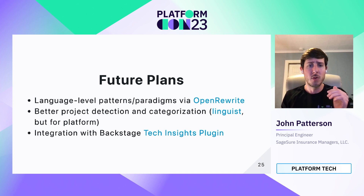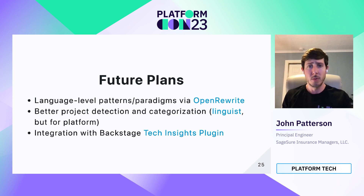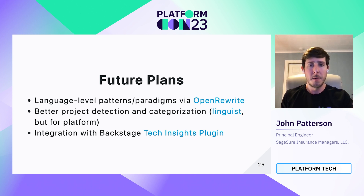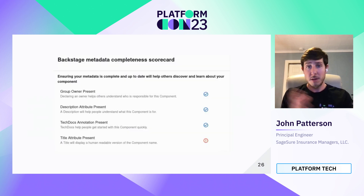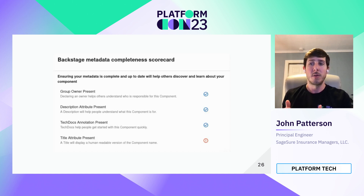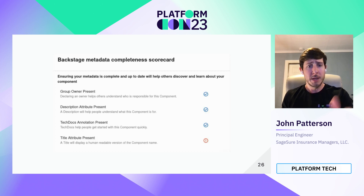Another planned feature is better project detection and categorization. GitHub has linguists to detect the types of languages being used in a project — we want to do the same thing: hey, this is a Java service deployed on Kubernetes, or this is a Go library. That way not every check has to reinvent the wheel. Finally, we want to integrate with the Backstage Tech Insights plugin. Our scorecard is currently a Grafana dashboard, and we want to put that right next to the service component view inside Backstage. Here you can see an example of what that might look like.